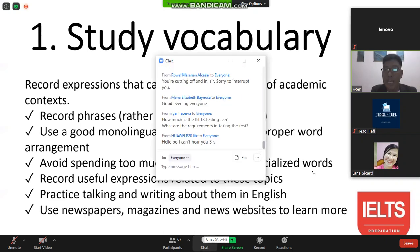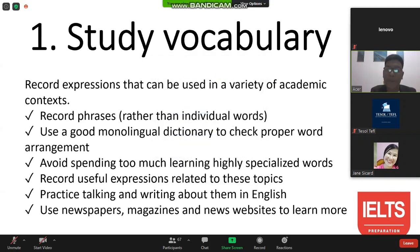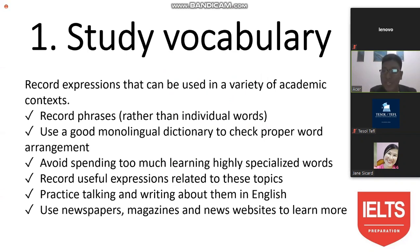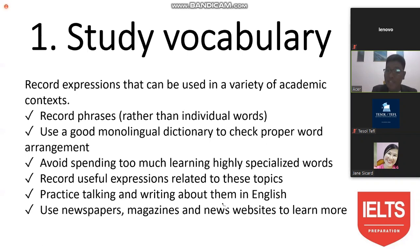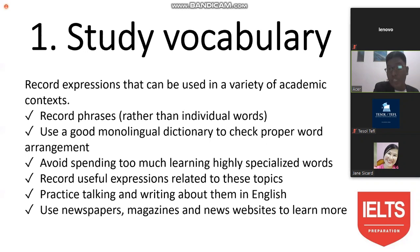Number two: use a good monolingual dictionary to check proper word arrangement. A monolingual dictionary uses words that are not too difficult to understand. Some subjects in IELTS require specific words — for example, in medicine, the word 'sex' can denote an organ or intercourse. Similarly, 'mistress' can mean an illegal wife, but also the legal wife or first lady of a household.